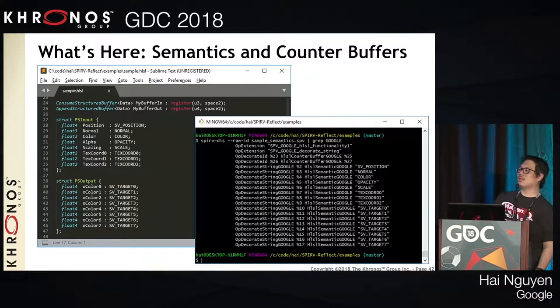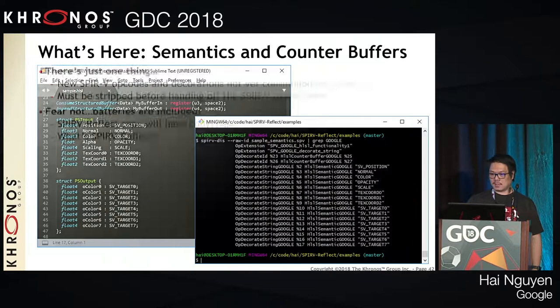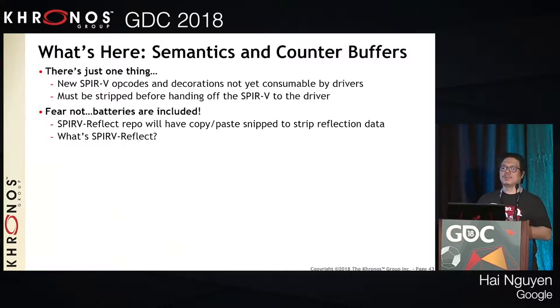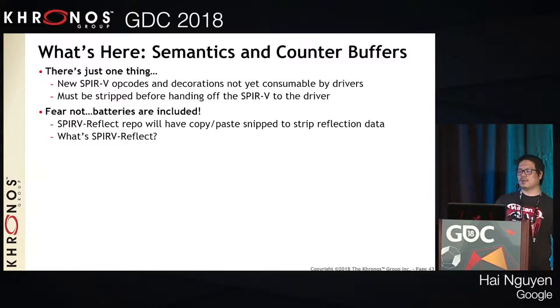Here's semantics and counter buffers in action — on the left is the source code showing the workflow, and this is what it looks like in the SPIR-V. One slight catch: because drivers can't consume the opcodes and decorations yet, they need to be stripped before being fed to the driver. We'll provide a code snippet — about 20 lines of code — that removes all the opcodes for the semantics and counter buffer decorations so you can pass clean SPIR-V to the driver. This code will appear in the SPIR-V Reflect repo.